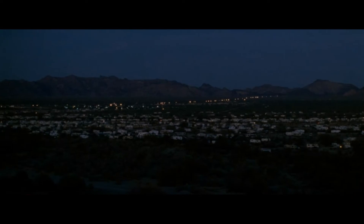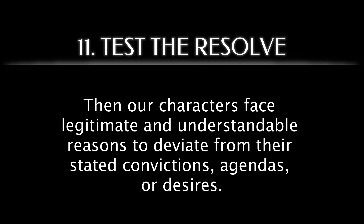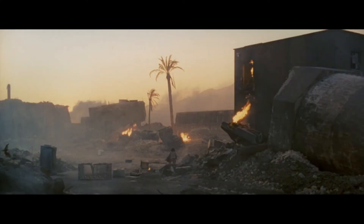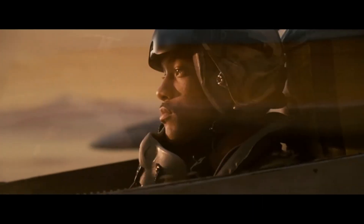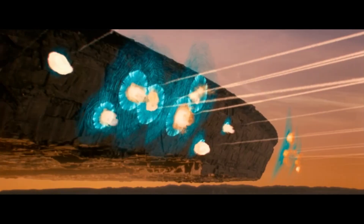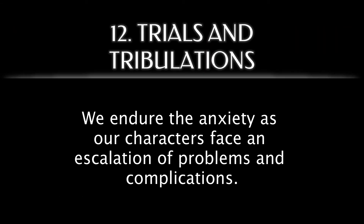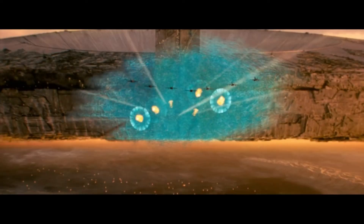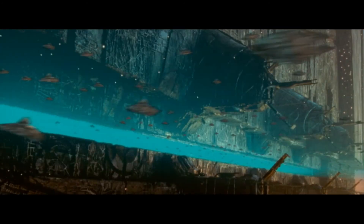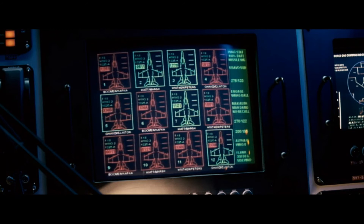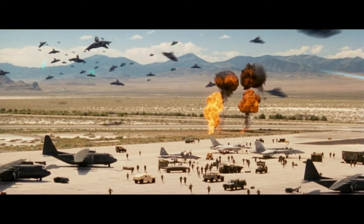Russell and family join the RV migration. Then our characters face legitimate and understandable reasons to deviate from their stated convictions, agendas, or desires. Jasmine crawls from the rubble to find civilization gone, while Steve brings a fighter jet to a space battle — but their puny Earth missiles can't penetrate a force field. We endure the anxiety as our characters face an escalation of problems and complications. The aliens dispatch their own fighter jets, who decimate every squadron in the air, then turn their laser cannons to ground defenses.